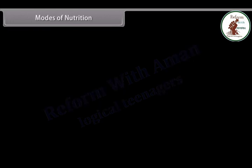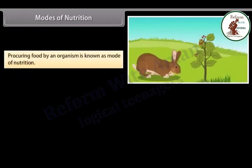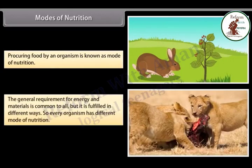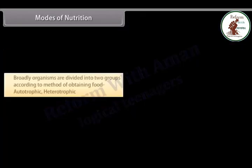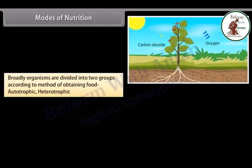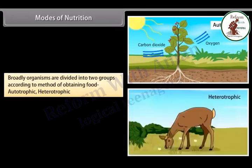Procuring food by an organism is known as mode of nutrition. The general requirement for energy and materials is common to all, but it is fulfilled in different ways, so every organism has a different mode of nutrition. Broadly, organisms are divided into two groups according to method of obtaining food: autotrophic and heterotrophic.